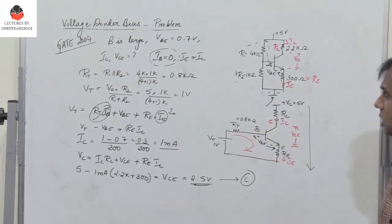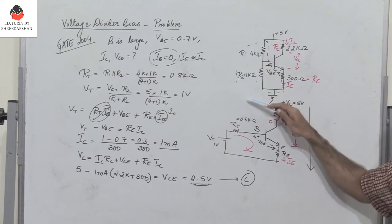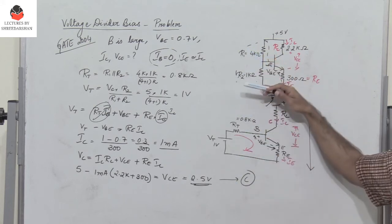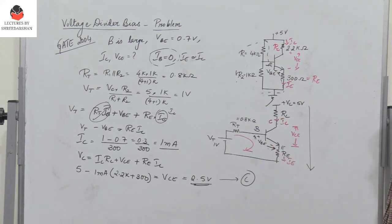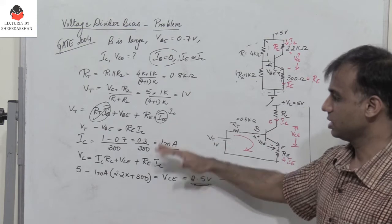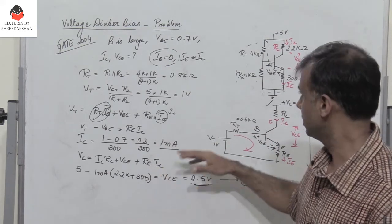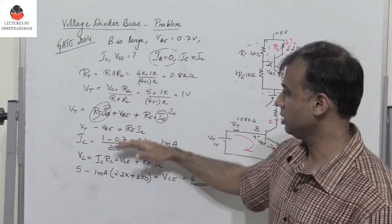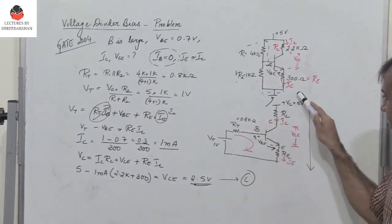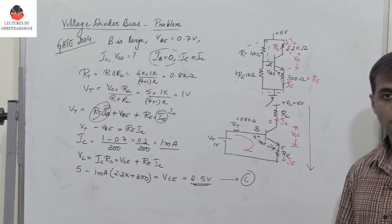The only thing you need to do is write the equivalent of the circuit by using Thevenin's theorem by calculating Vt and Rt. All the calculations are very simple. You will directly get the value of Vce and Ic by using these equations when you apply KVL along this path and along this path.